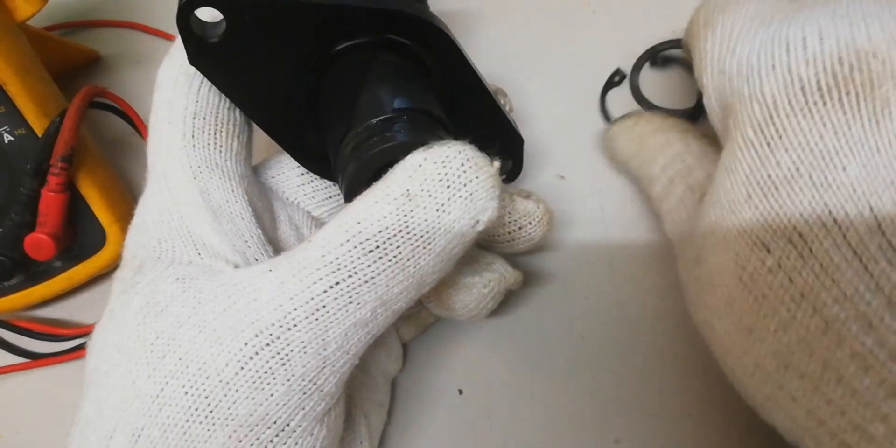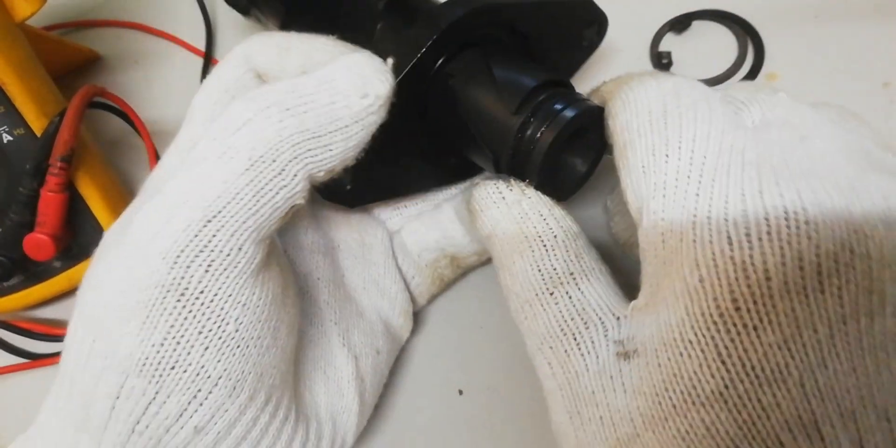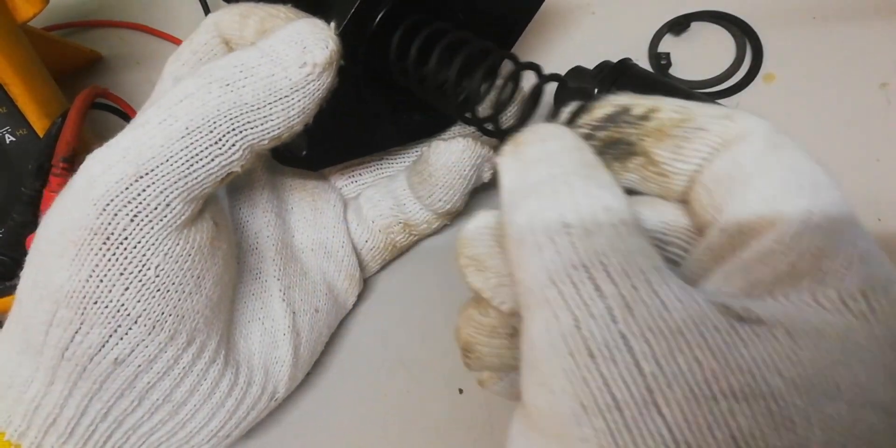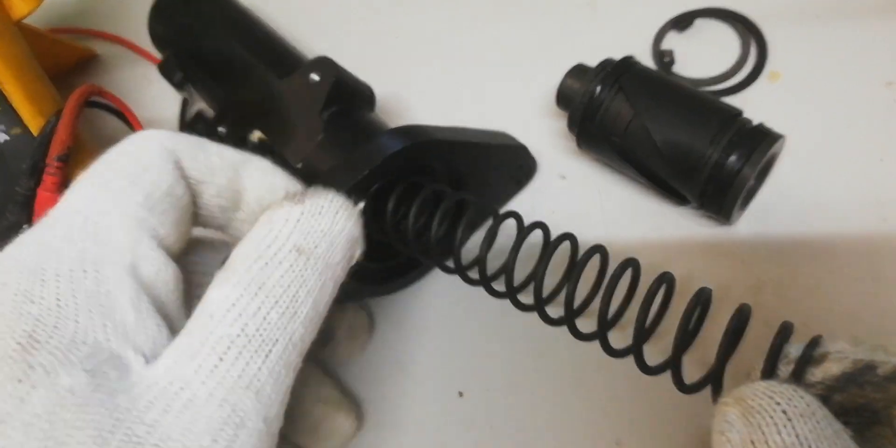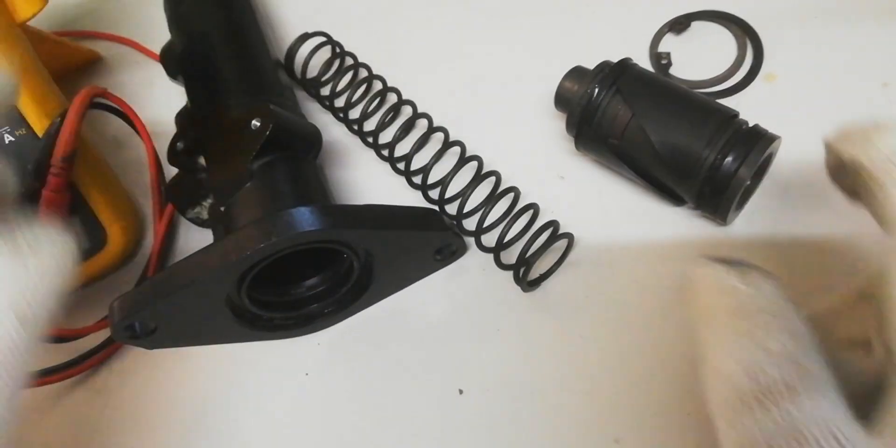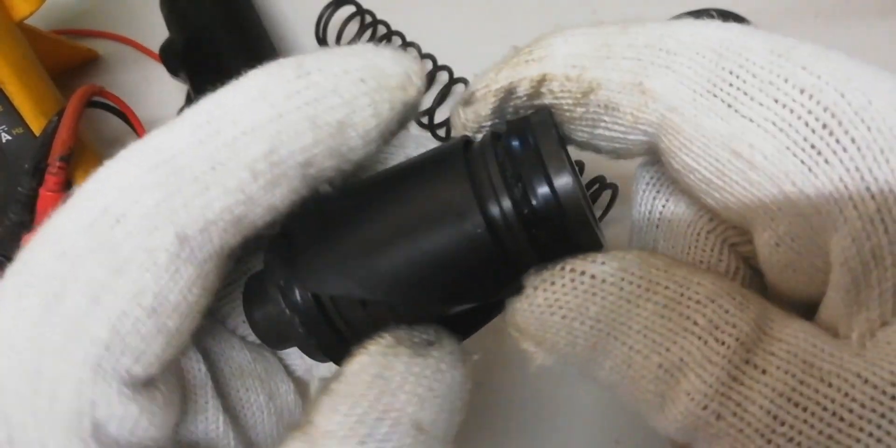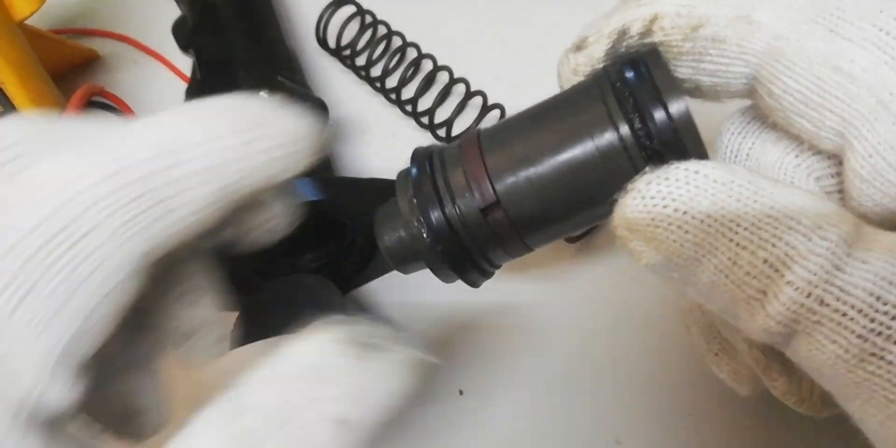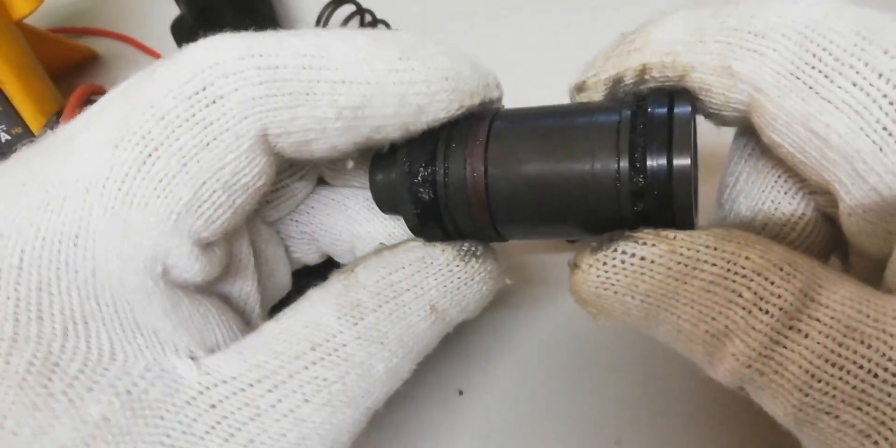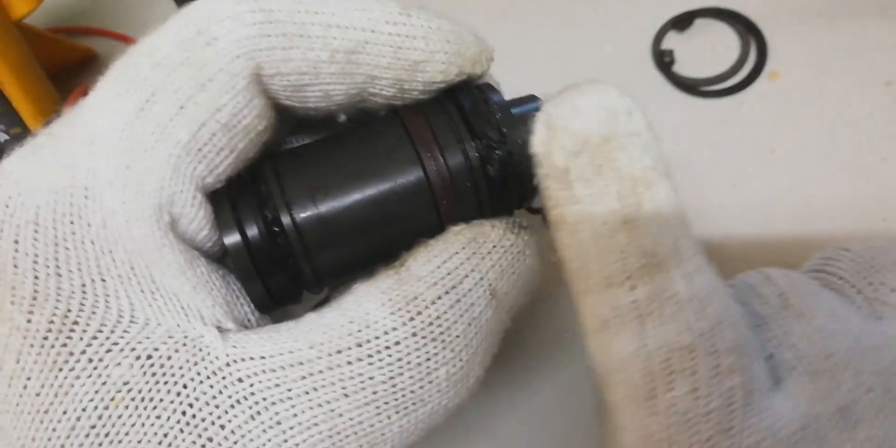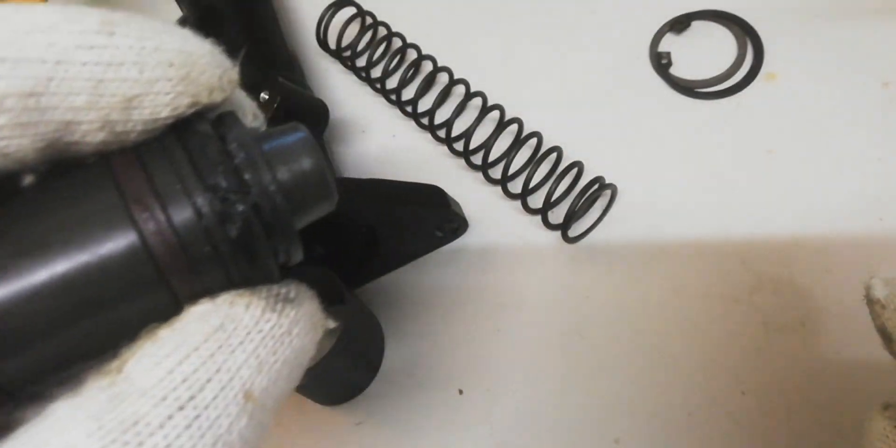We always try to find what is the defect of this clutch master cylinder. As we see in the video, the rubber piston seal is torn out.